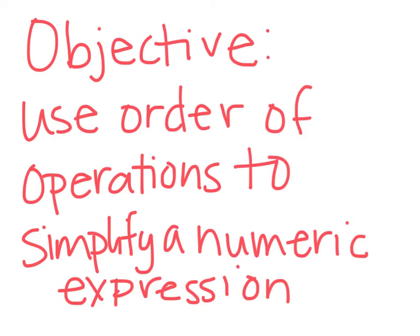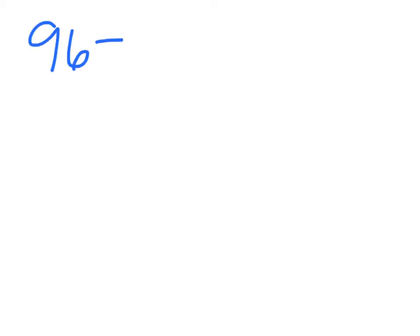So what on earth is a numeric expression? A numeric expression is a number sentence that contains numbers and operation symbols, but it doesn't include an equals sign. 96 minus 26 plus 48 is an example of a numeric expression.